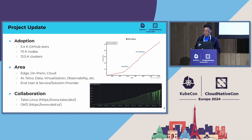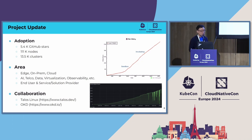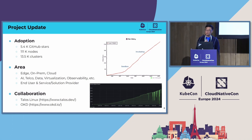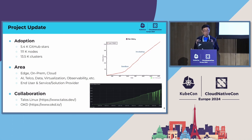For deployment area, like I said, we want Longhorn to run anywhere. Right now Longhorn can run at the edge — probably you saw some news about companies using Longhorn as a storage solution for their edge deployments. So edge, on-prem, and cloud are all areas I want to target for installation. From community feedback, we know AI workloads, telco, data virtualization, observability, and other domains are using Longhorn. Longhorn is not just used in end-user solutions — it has also become a critical mission component in service provider solutions as well.